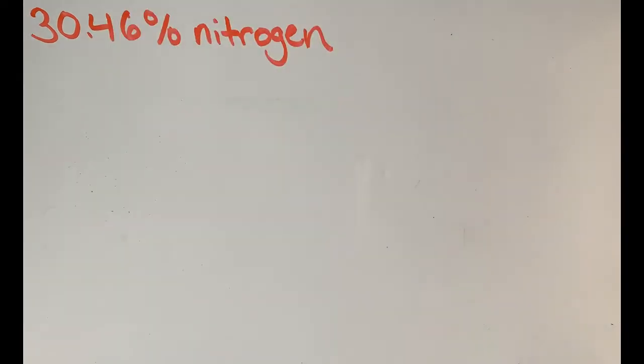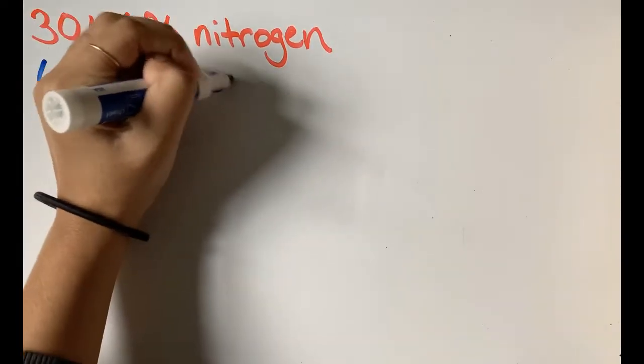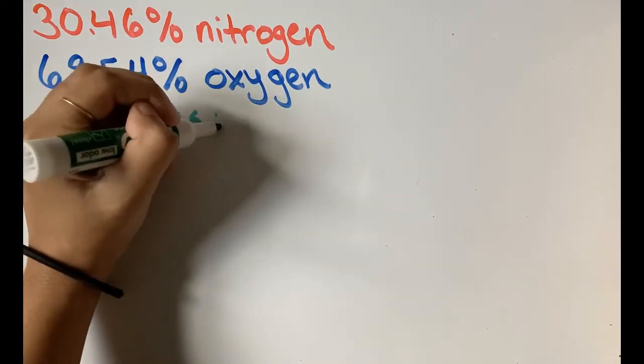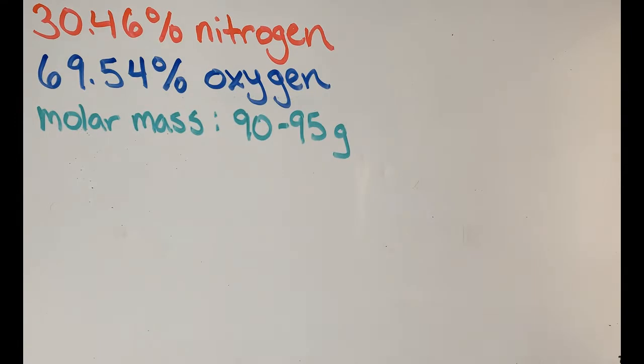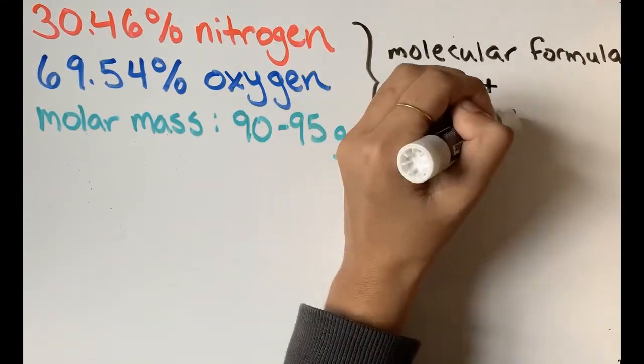Our problem states, a sample of a compound contains 30.46% nitrogen and 69.54% oxygen by mass. The molar mass of the compound is between 90 and 95 grams. Determine the molecular formula and accurate molar mass of the compound.